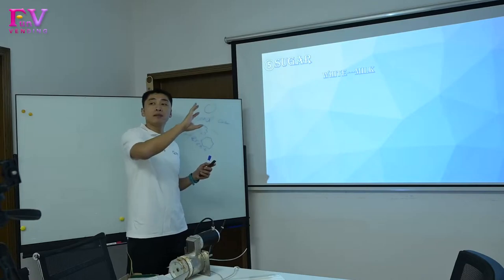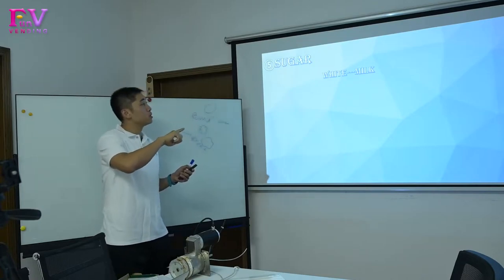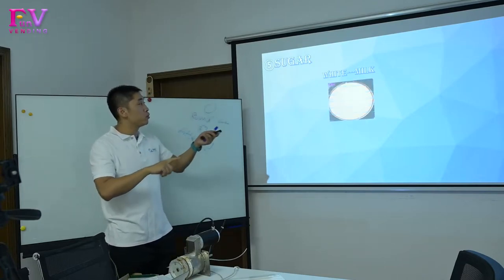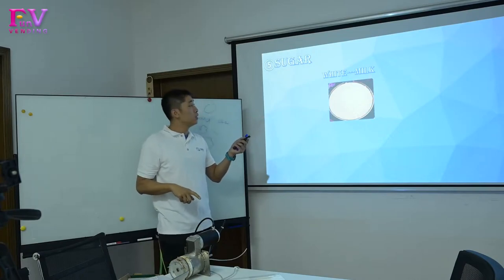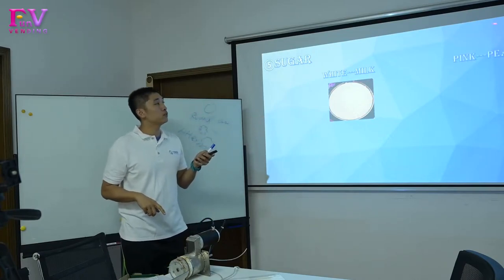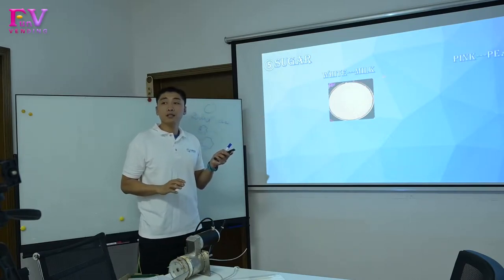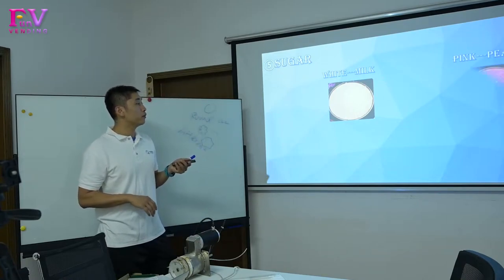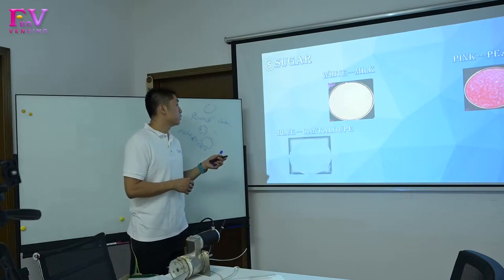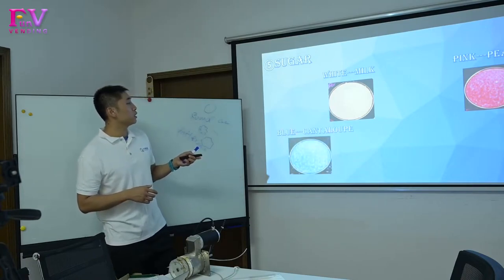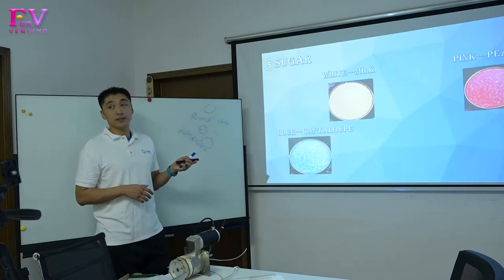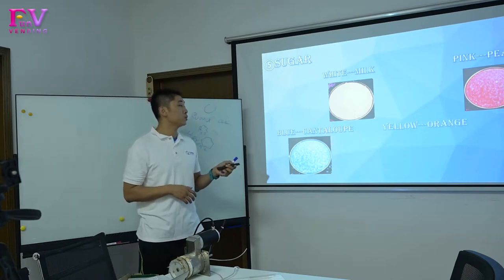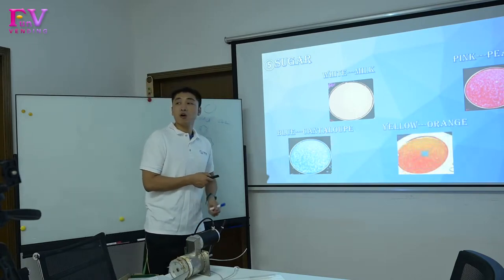It's all set in our machine. One is white with the milk flavor, and the other one is pink, the peach flavor. The third one is blue, the candy look. And the last one is yellow, the orange taste.